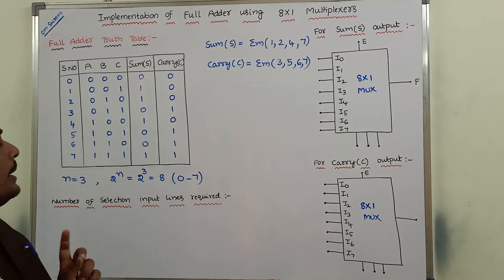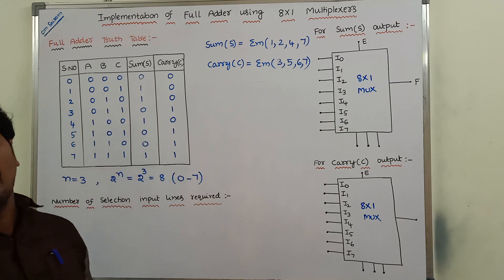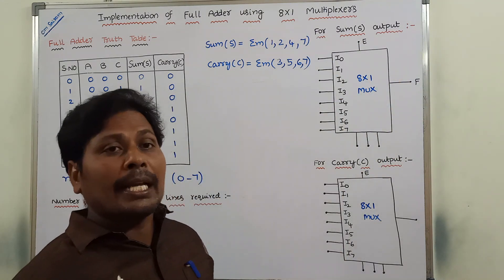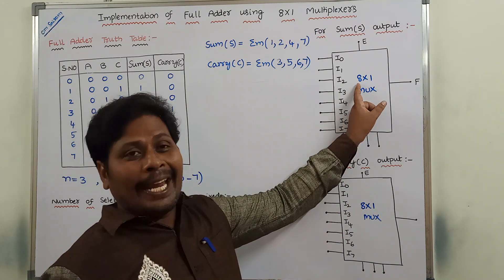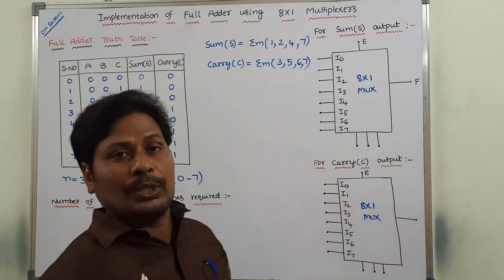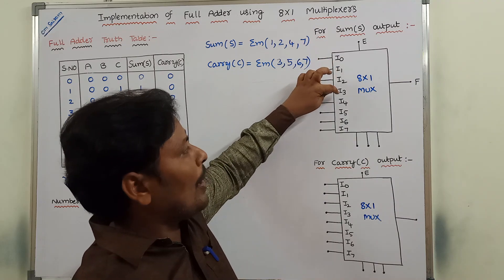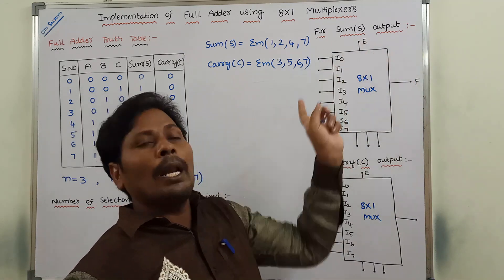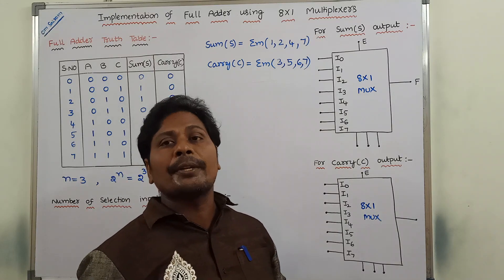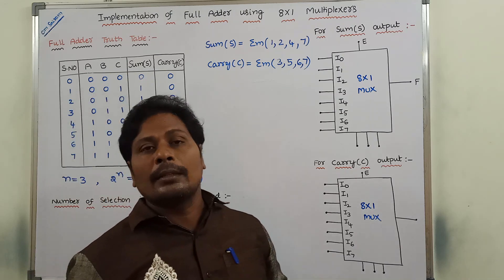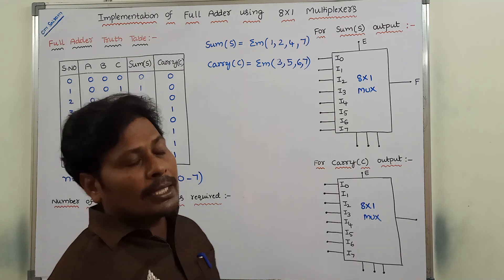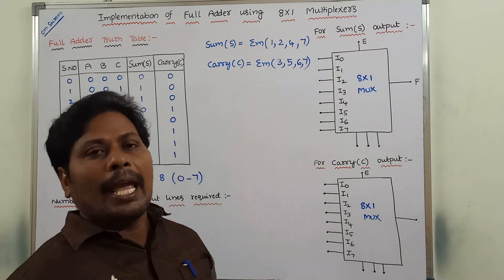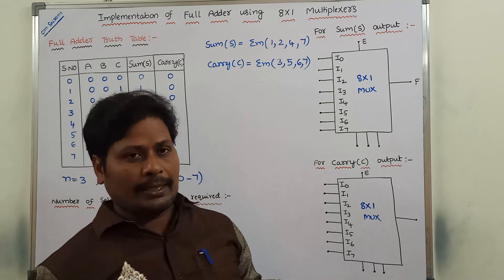This is an 8 by 1 multiplexer. As the name implies, it can take 8 inputs and produce only 1 output. The 8 inputs are I0, I1, I2, I3, I4, I5, I6, and I7. The only 1 output is S. Next, this is the enable input. This enable input controls the operation of the multiplexer. If E equals 1, the multiplexer works properly. If E equals 0, the multiplexer does not perform its operation. So E input is called the enable input or control input of the multiplexer.